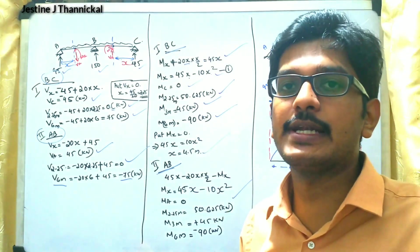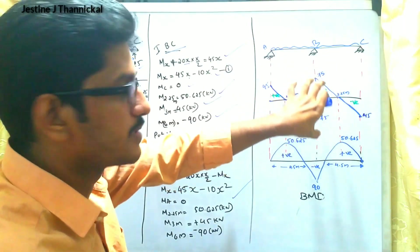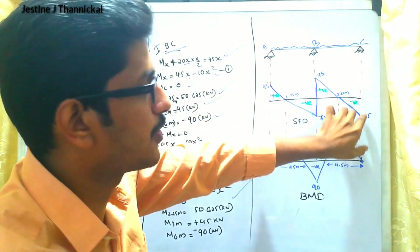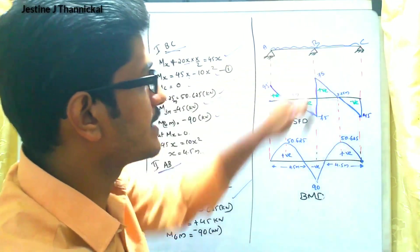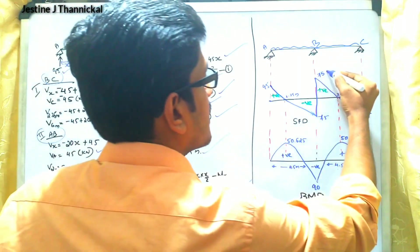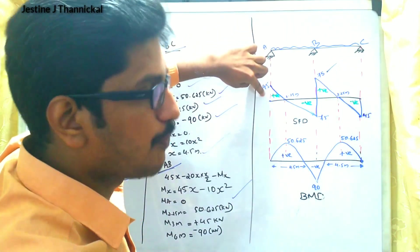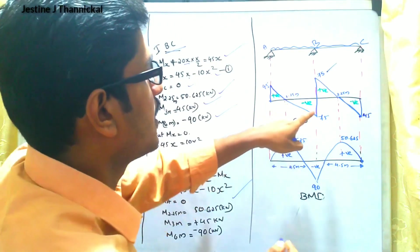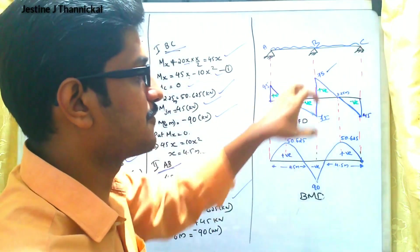To draw the SFD: at joint C, the value is −45 kN, drawn downward. At 2.25 m, shear force is 0. At 6 m (point B), it is +75 kN, drawn upward. Symmetrically for section AB: at point A it is +45 kN, zero at 2.25 m, and −75 kN at point B.